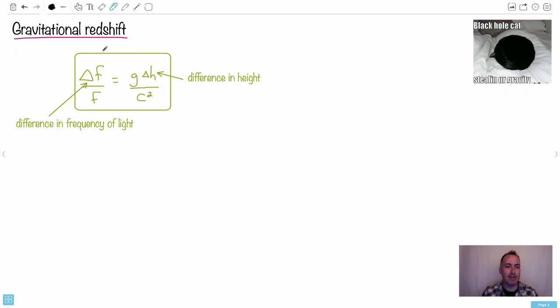So we have something else called gravitational redshift as well. I like this black hole cat stealing your gravity. So we have something called gravitational redshift. So if you're close to a gravitational object or farther away, then you might have the frequency of light actually changing. That also happens as you get closer to a gravitational object like a black hole, but also anything else. Delta H is going to be a difference in height and this will be a difference in frequency. And that's a pretty straightforward equation.